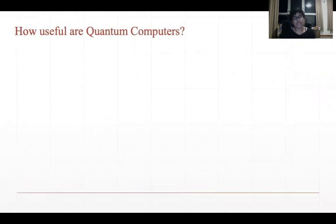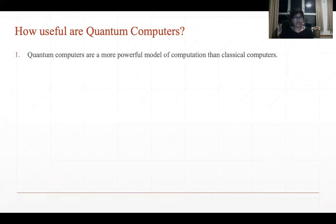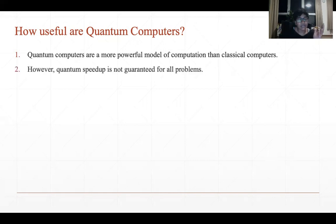Of late, a lot of money and effort is going into quantum computing. That is because for very many computational problems, we have quantum algorithms that are faster than the classical ones. And rightfully so, because quantum computers are a more powerful model of computation than classical computers. However, we also see that quantum speedup is not guaranteed for all problems.